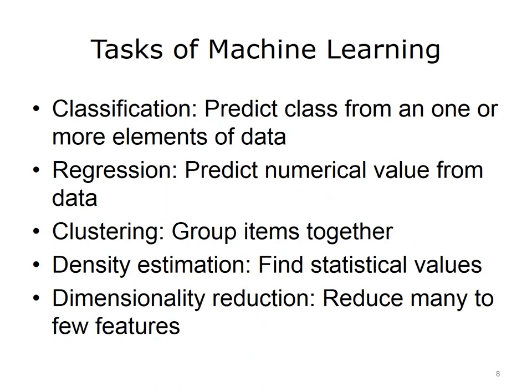There are a number of different tasks for which we use machine learning. One of the most common is classification, where we aim to predict the class from one or more elements of data. There is also regression, where we aim to predict a numerical value from the data. Another type of task is clustering, where we try to group various items together. There is also density estimation, where we attempt to determine how well the data fit a model statistically. Finally, there is dimensionality reduction, where we aim to take data sets of many dimensions and reduce them to fewer features for simplification or computational efficiency.